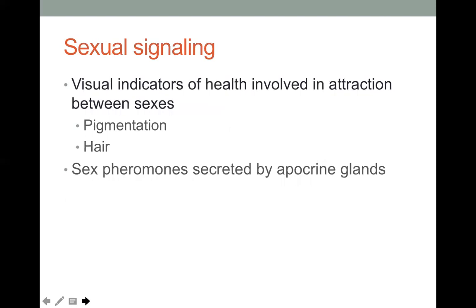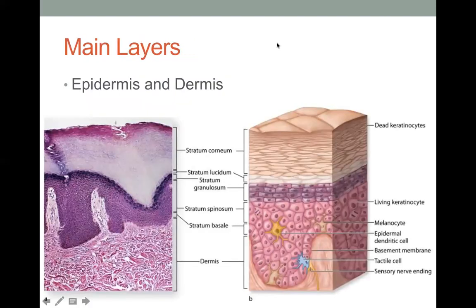The last function of the integumentary system is sexual signaling — visual indicators of health involved in attraction between sexes, including pigmentation and hair. Sex pheromones are secreted by apocrine glands, which are very characteristic in animals such as dogs. For humans, pigmentation and hair serve as indicators for attraction between sexes.